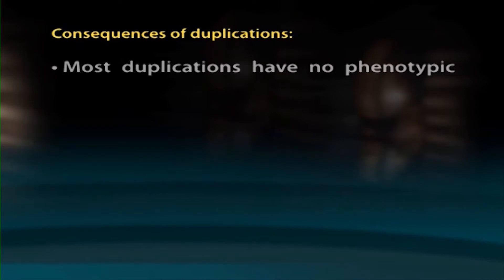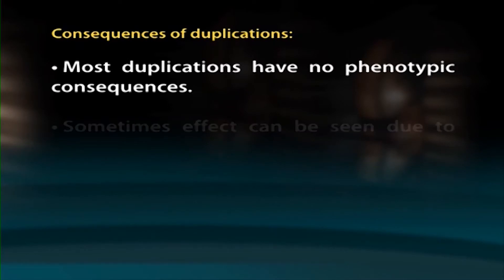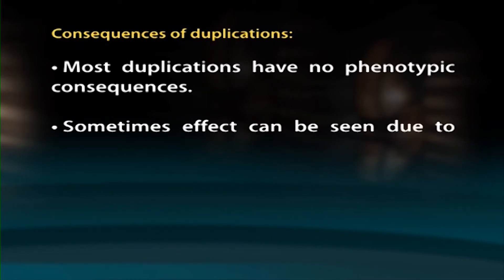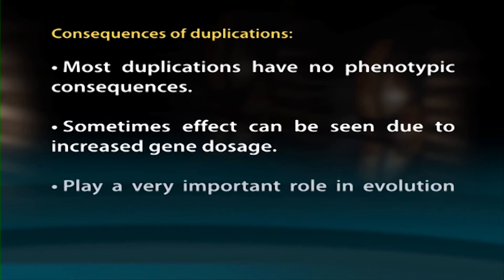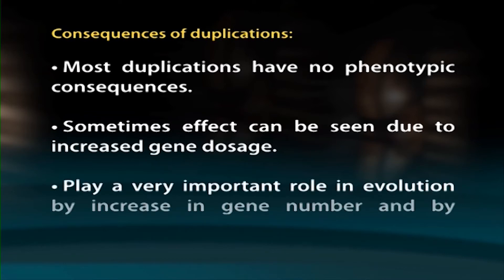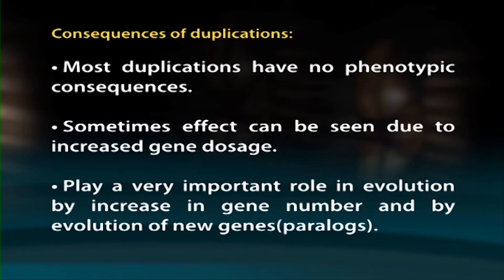Consequences of duplications. Most duplications have no phenotypic consequences. Sometimes an effect can be seen due to increased gene dosage. Duplications play a very important role in evolution by increasing gene number and by enabling the evolution of new genes, called paralogs.